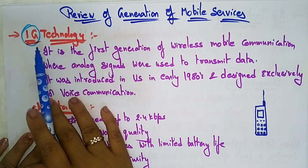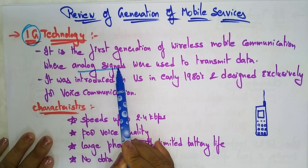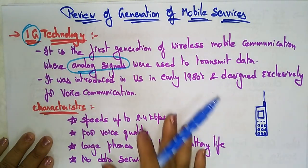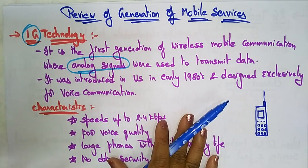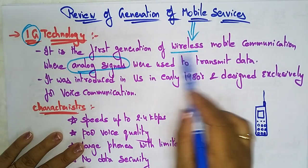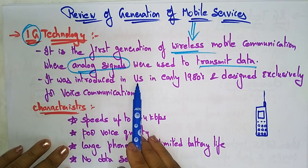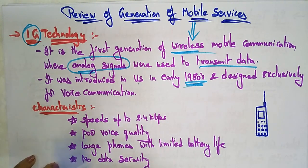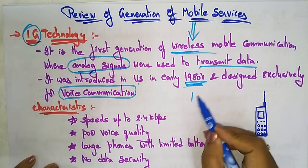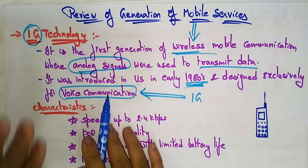The first technology is 1G, the first generation of wireless mobile communication, where analog signals were used to transmit data. In the first generation, we used analog signals, not digital signals. It was introduced in the US in the early 1980s and designed exclusively for voice communication. In 1G technology, you cannot send messages or view pictures.